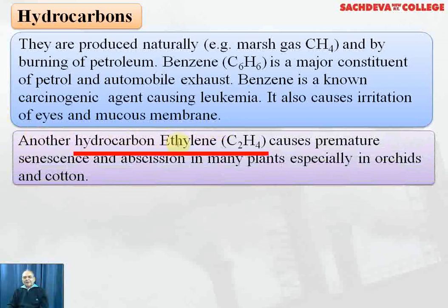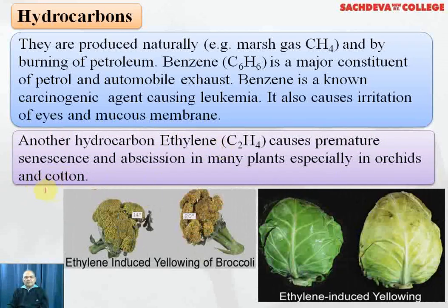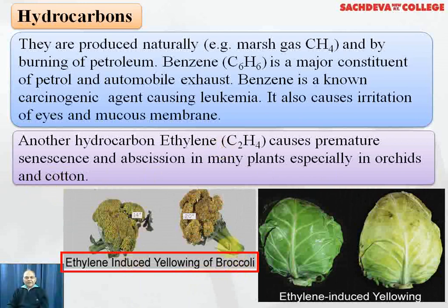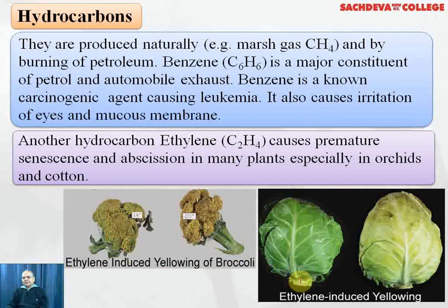Another hydrocarbon is ethylene, which causes premature senescence and abscission in many plants, especially in orchids and cotton. You can see ethylene inducing yellowing of broccoli, which is used as a salad, and the yellowing of cabbage is nothing but the effect of ethylene.